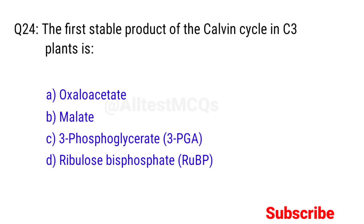Q24. The first stable product of the Calvin cycle in C3 plants is? Right answer is option C, 3-phosphoglycerate.